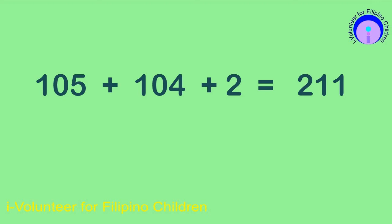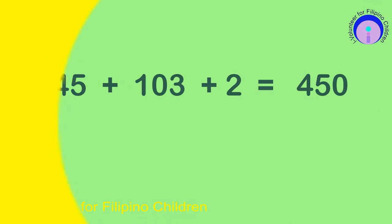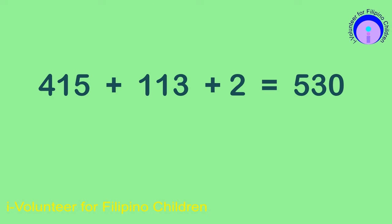105 plus 104 plus 2 is equal to 211. 309 plus 103 plus 2 is equal to 450. 415 plus 113 plus 2 is equal to 530.